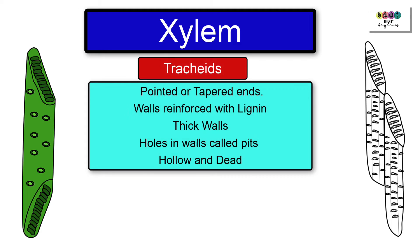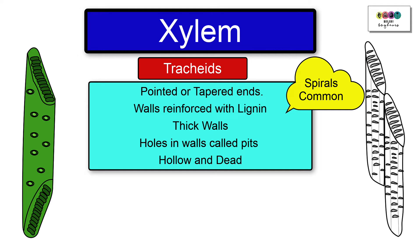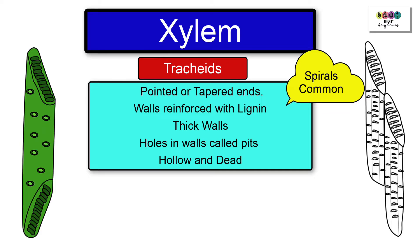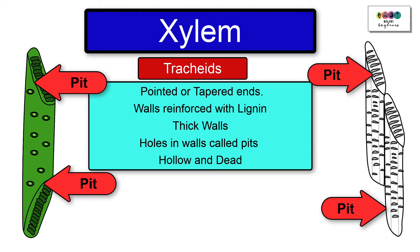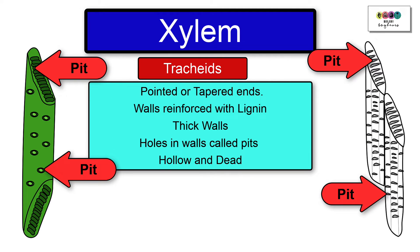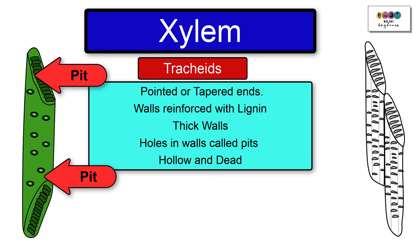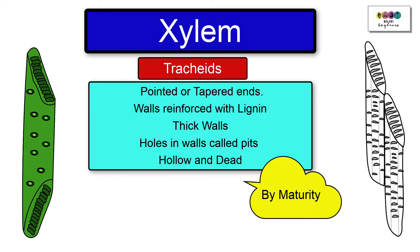So let's take a look at xylem tracheids. These particular cells have pointed or tapered ends. Their walls are reinforced with lignin, and this lignin is often laid down in particular types of patterns, for example spiral patterns. There are holes in the walls and in the ends called pits, and water can pass through these. Tracheids are hollow and dead.